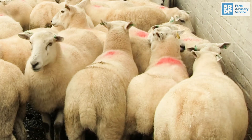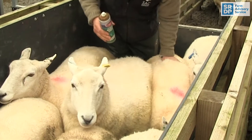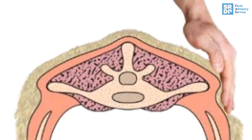We then feel and assess the prominence and the degree of fat over the horizontal processes, and assess the amount of muscle and fat under the ends of these bones.